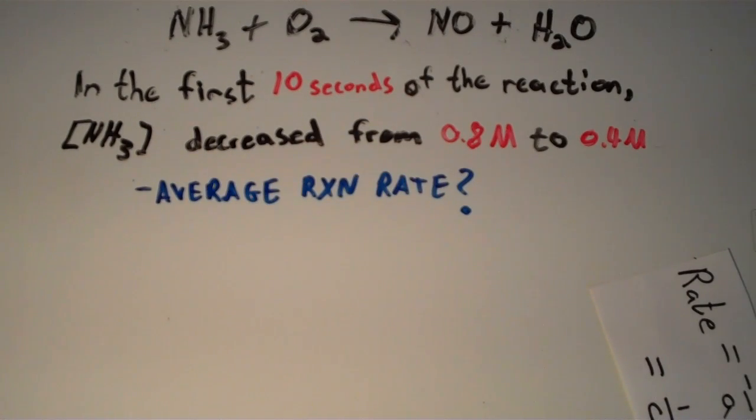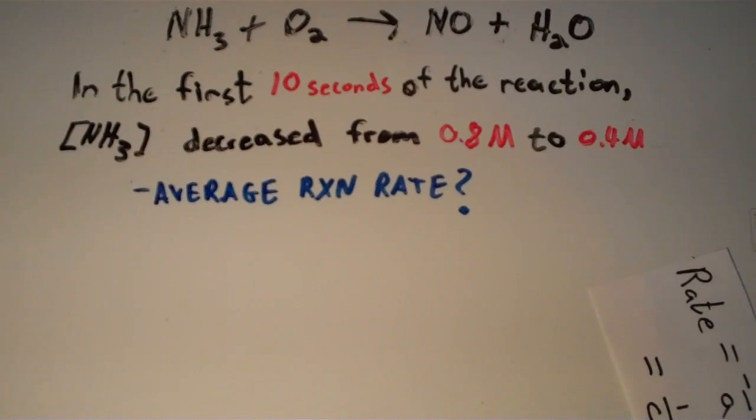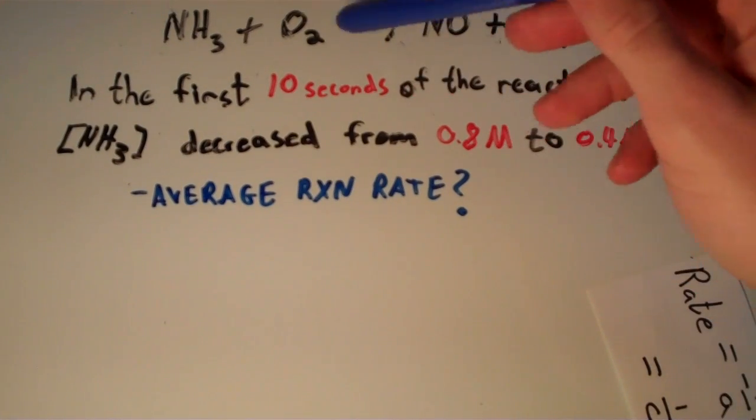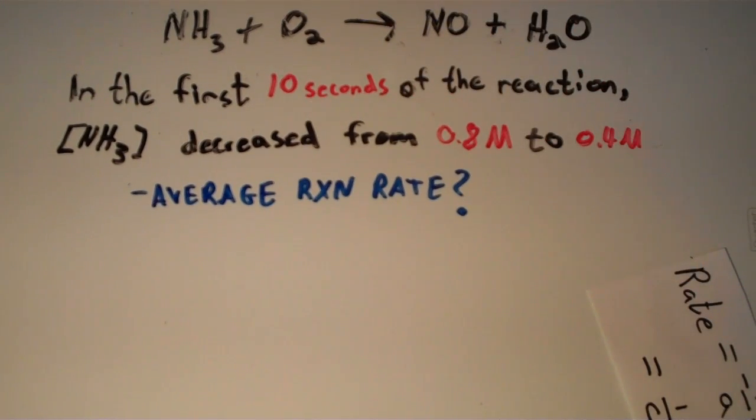All right, this is going to be a general reaction rates type of problem. So the problem says that suppose we have the following equation: NH3 plus O2 yields NO plus H2O.